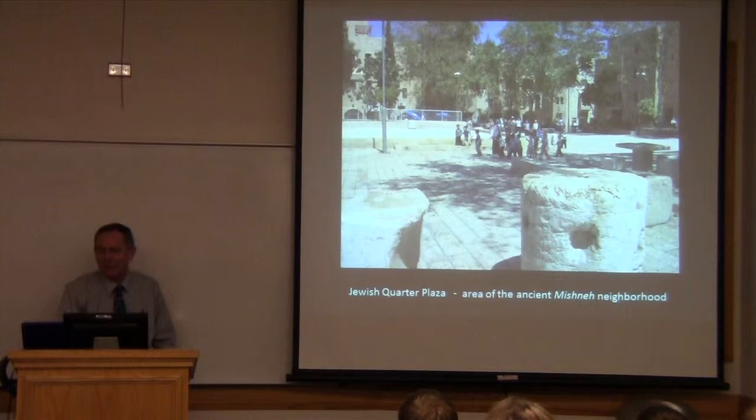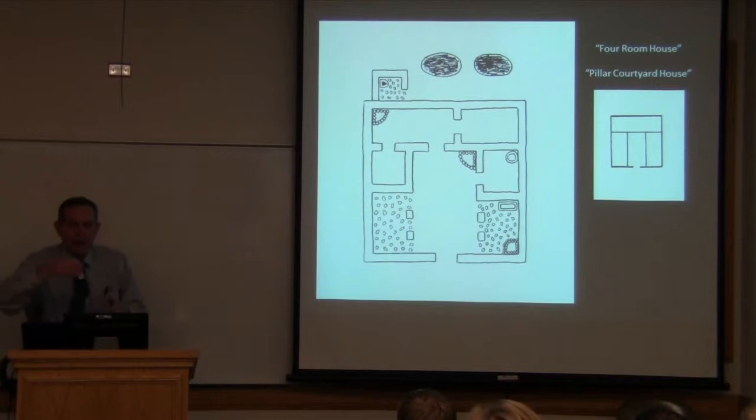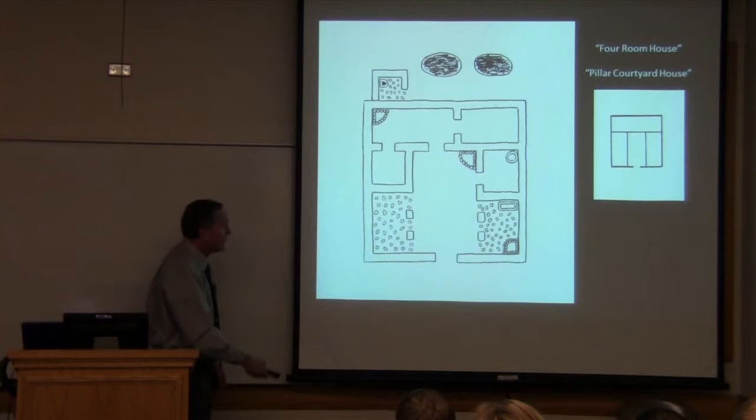Now, in this study, you also read about the four-room house, which is the old name for it. But nowadays, we who do archaeology, when we're talking about this Iron Age Israelite house style that we find literally everywhere, we will more often call it the pillared courtyard house. Although the basic design does feature four rooms—this would be one room, second room, third room, and a fourth room across the back—that's why they call it the four-room house.